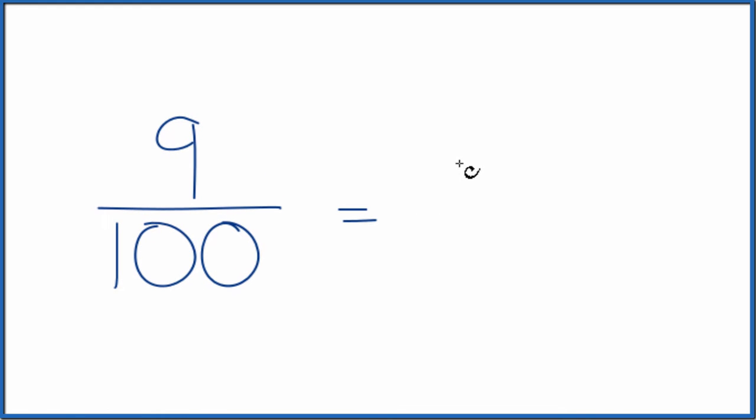We'd end up with 0.09. So the fraction 9 one-hundredths, that's equal to the decimal 0.09. They're the same value, just different representations.